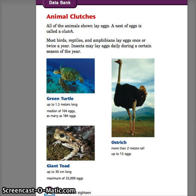You can see it's in the pages called the Data Bank. If you have an SRB or if you want to look at school, it's page 218 in your student reference book. It's called Animal Clutches. All of the animals shown lay eggs. A nest of eggs is called a clutch.